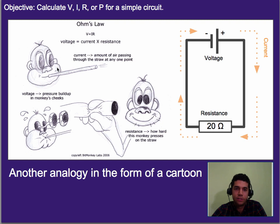Another analogy is we've got this idea of a monkey blowing air through a straw in this case. So voltage would be kind of the pressure provided by the monkey from his cheeks. Current would be the amount of air passing through the straw. And resistance would be another monkey coming in and squeezing that straw. So if he squeezes it really tight, then not much air goes through.